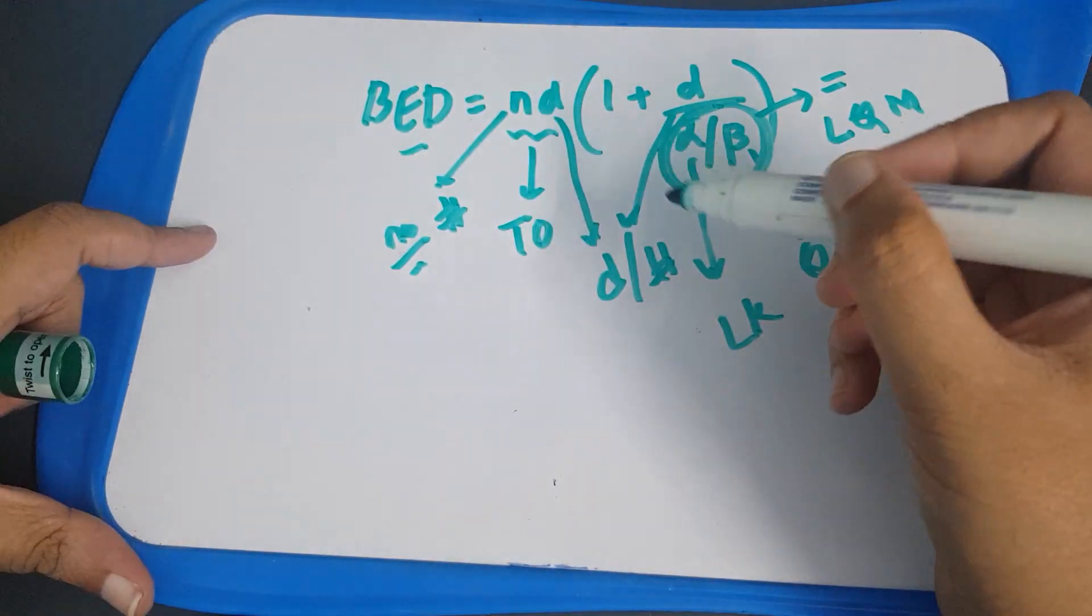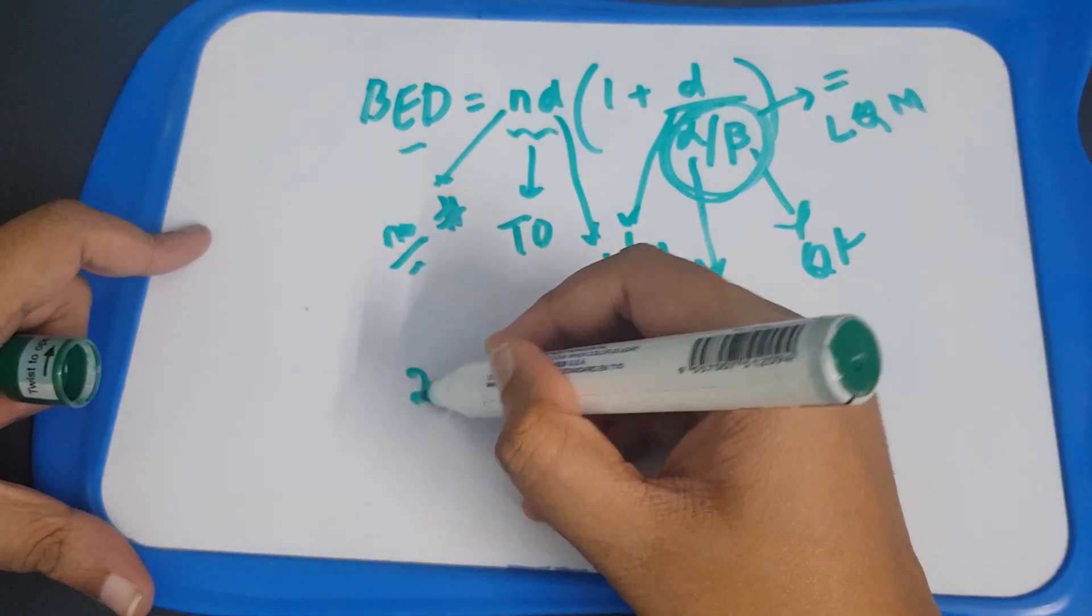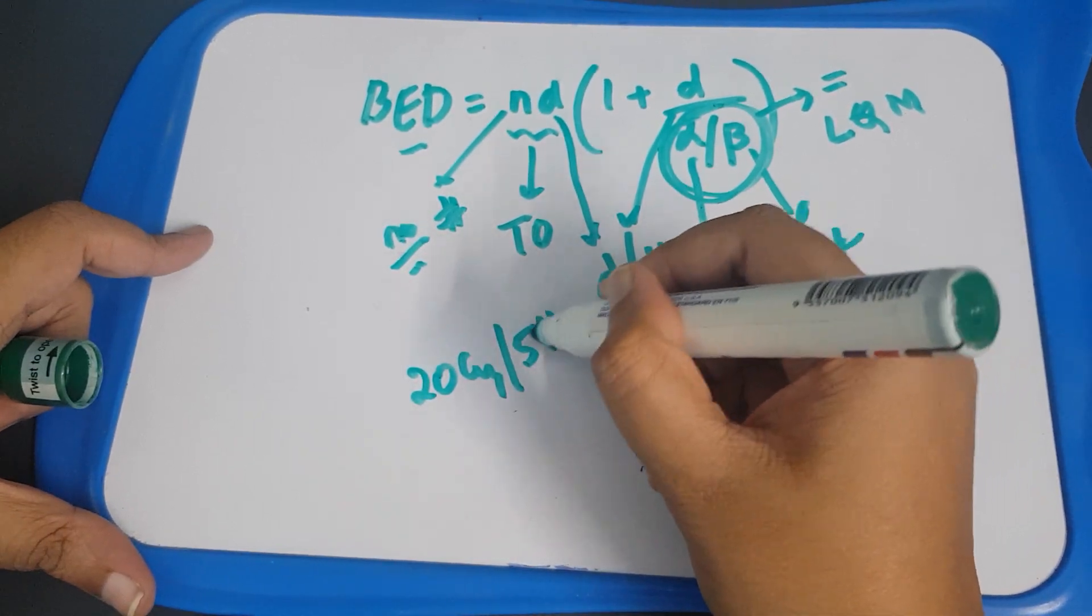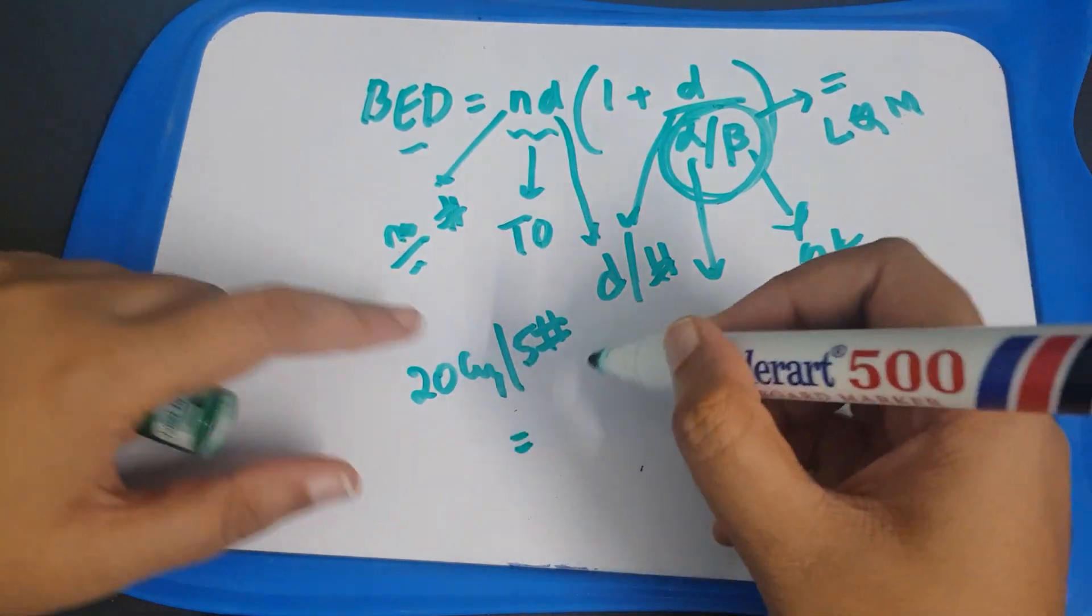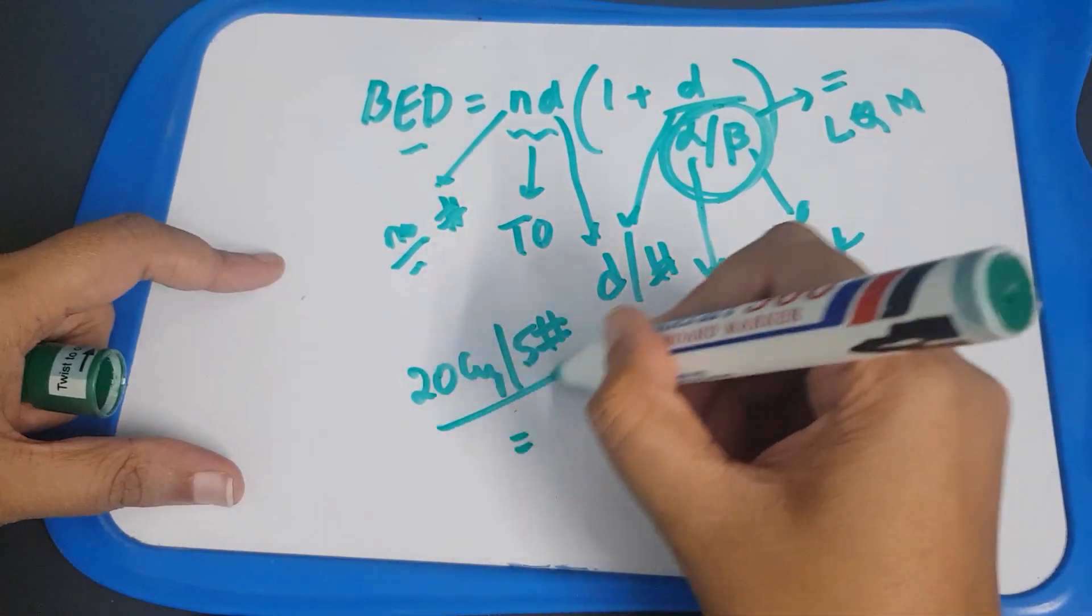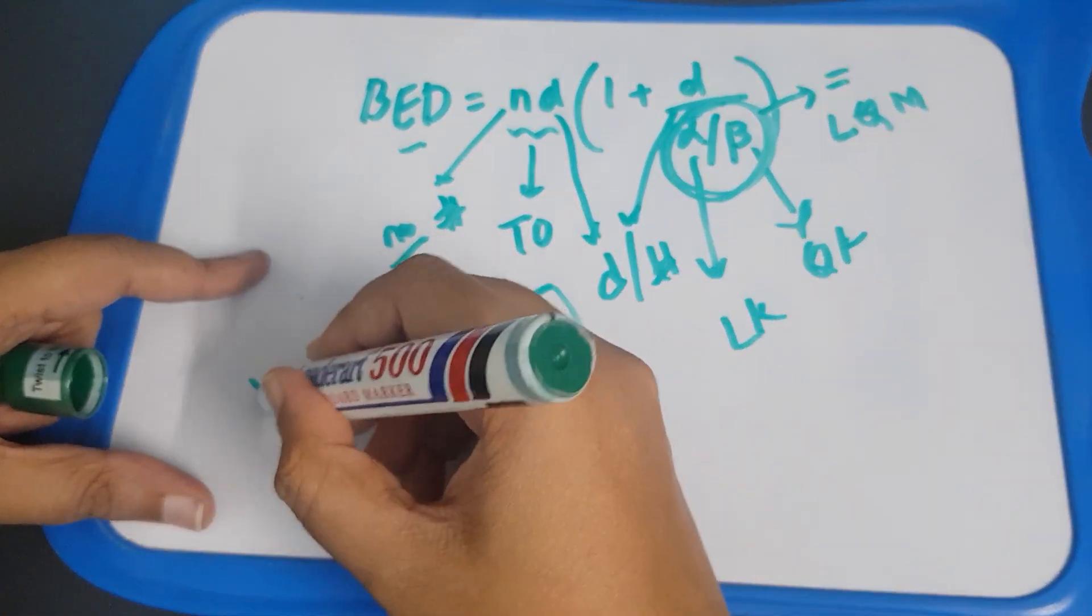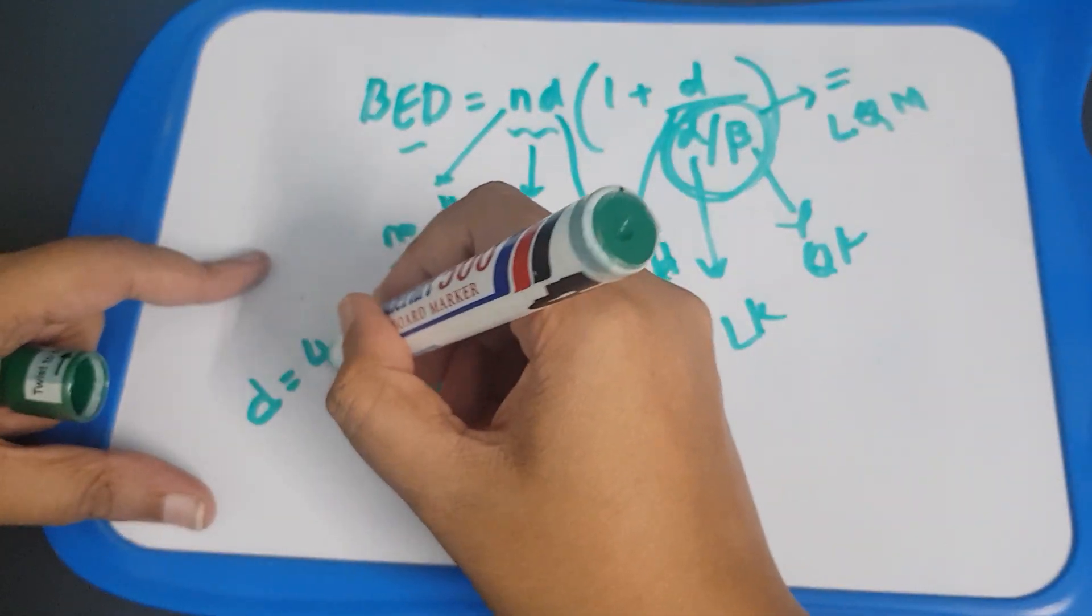Now, if you are giving 20 gray in 5 fractions to a palliative case, what's the biological effective dose? Total will be, you are giving in 5 fractions. What's the dose per fraction? 20 divided by 5 is 4.